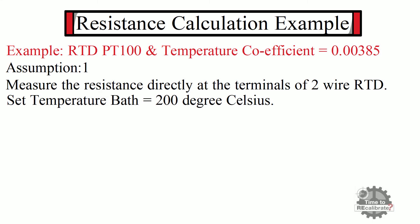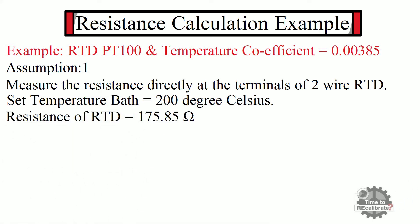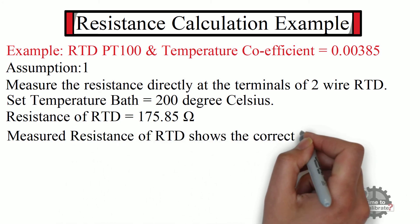And measure the resistance of RTD at its terminals. You should get 175.85 ohm resistance, which is correct measurement. In other words, the measured resistance of RTD shows the correct temperature reading.